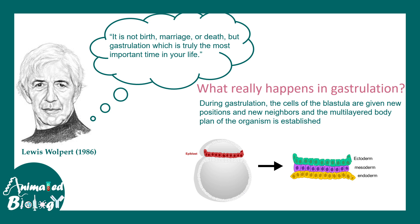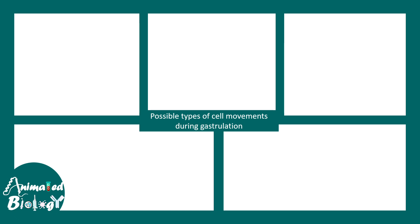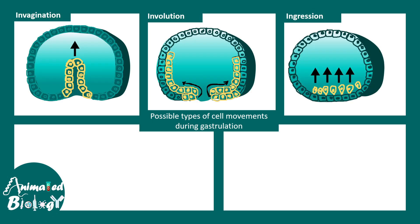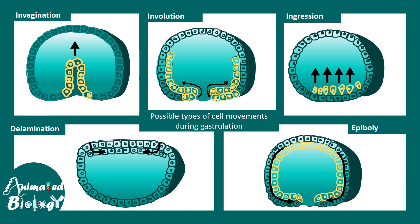This movement is not haphazard. It is highly coordinated and each movement has features. There are different kinds of movement that can possibly occur during gastrulation, like invagination, involution, ingression, delamination, or even epiboly. Not all these movements happen all at once. There could be a combination of movements that occur in one organism, and these kinds of morphogenetic movements are different throughout the animal kingdom.